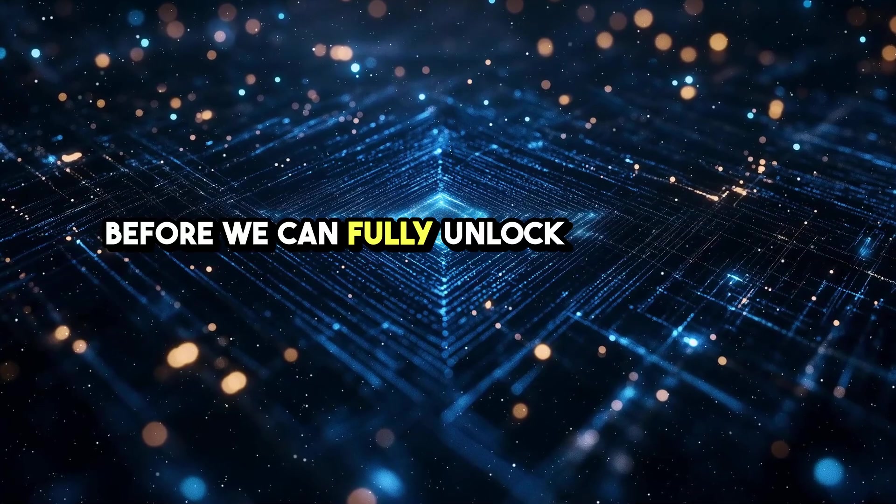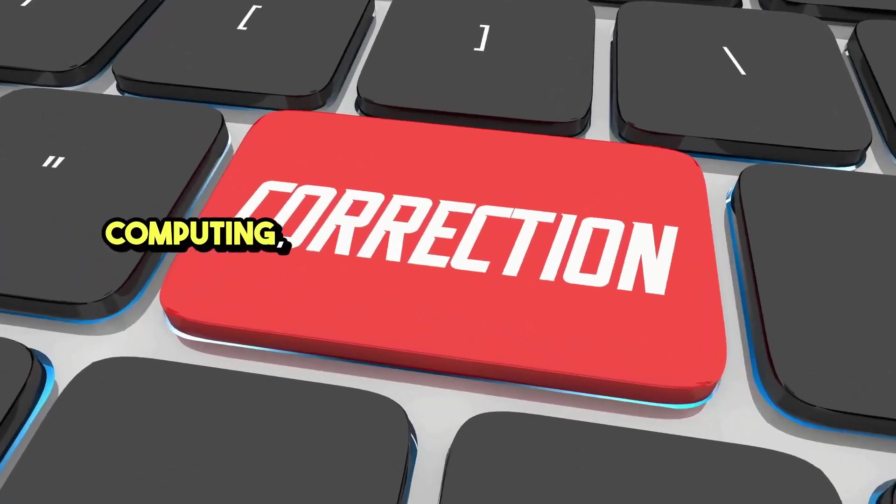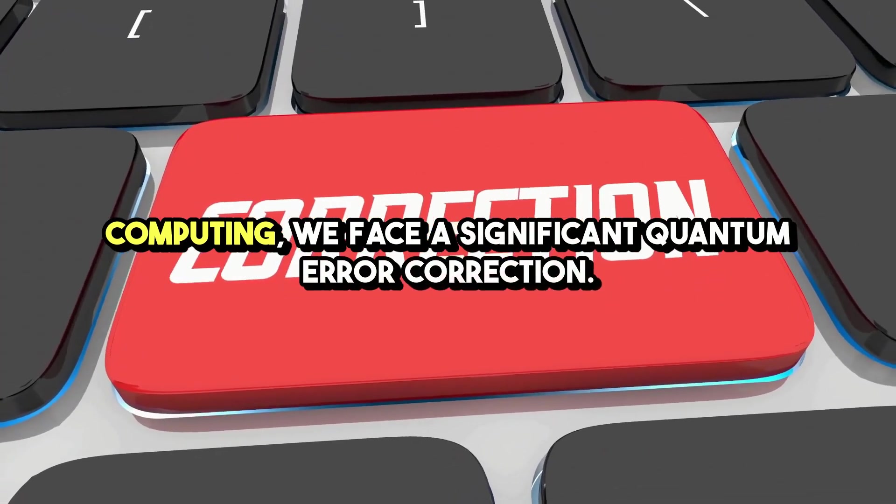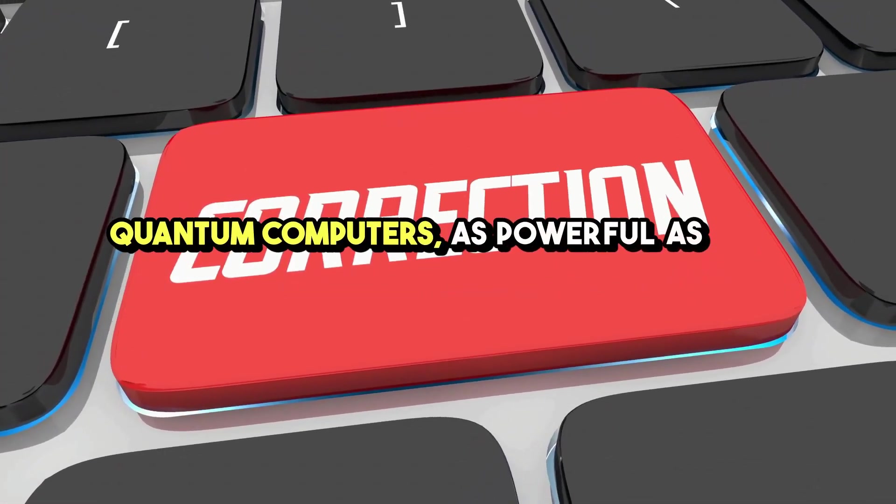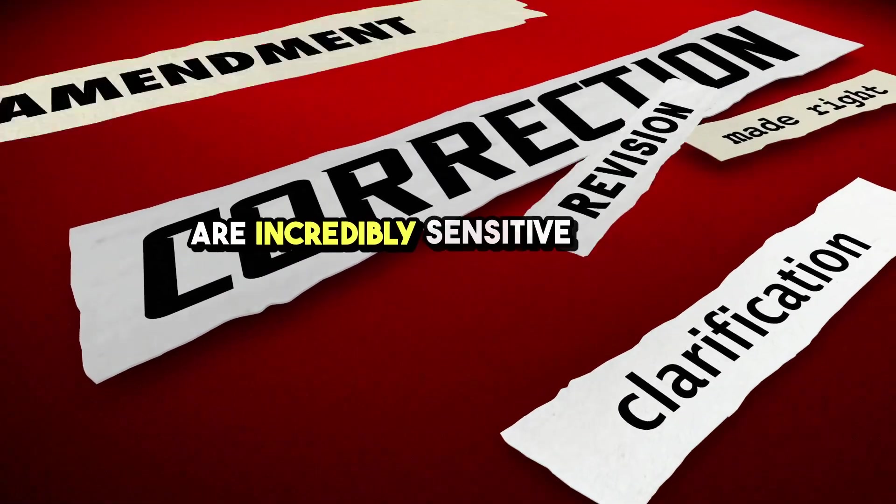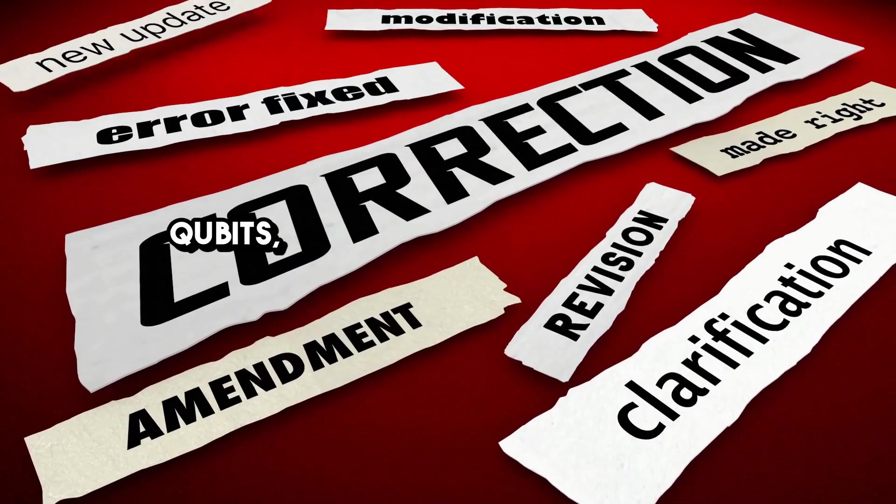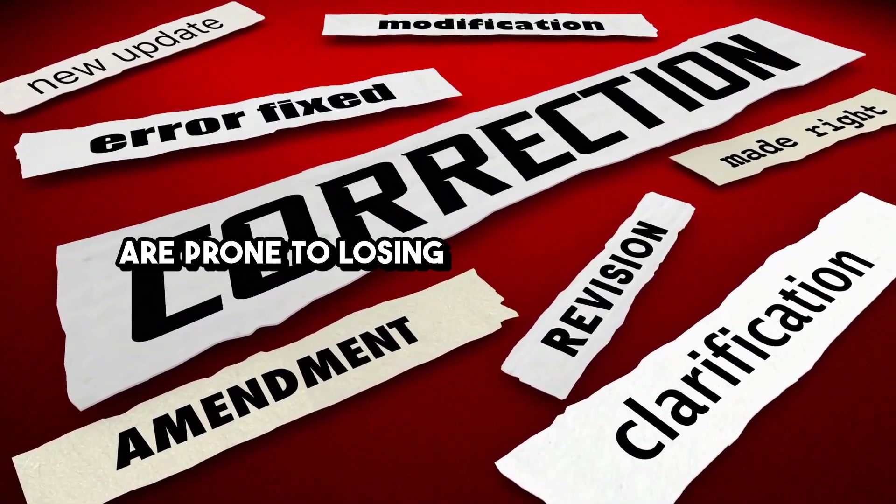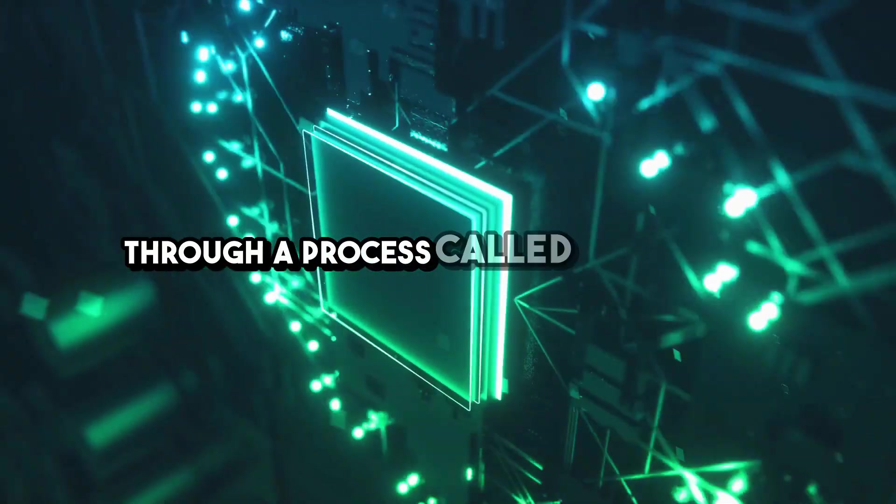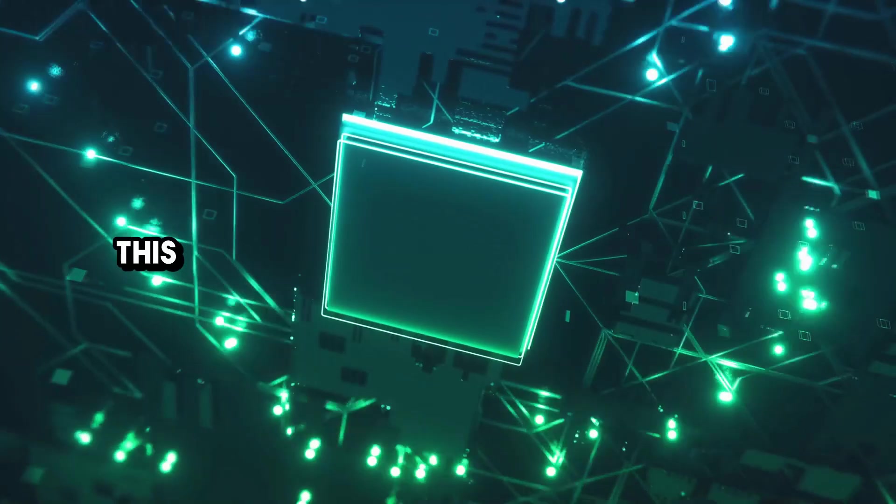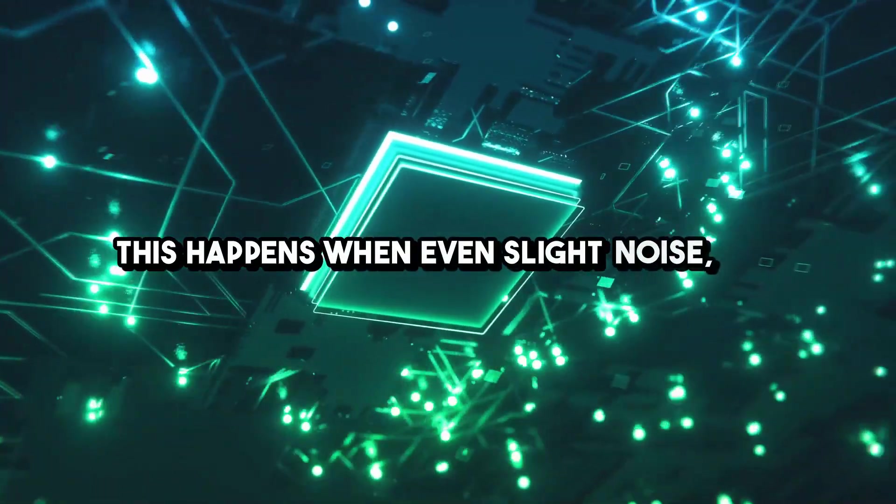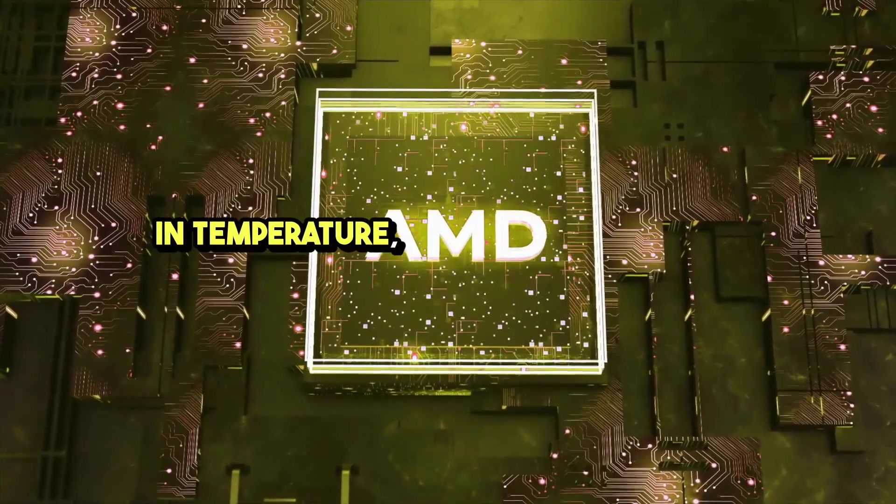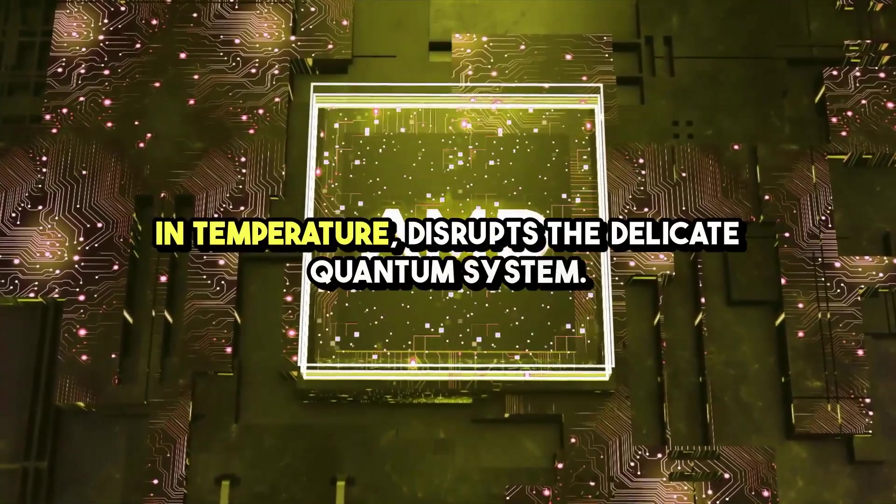Before we can fully unlock the potential of quantum computing, we face a significant challenge, quantum error correction. Quantum computers, as powerful as they are, are incredibly sensitive to their environment. Qubits, the basic units of quantum information, are prone to losing their quantum state through a process called decoherence. This happens when even slight noise, like a magnetic field fluctuation or a change in temperature, disrupts the delicate quantum system.